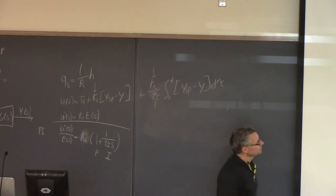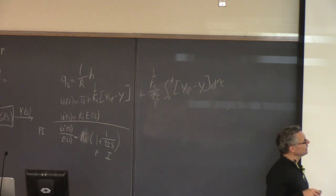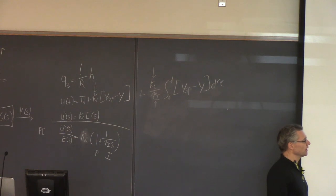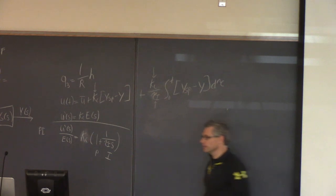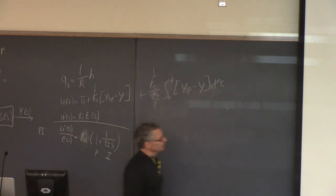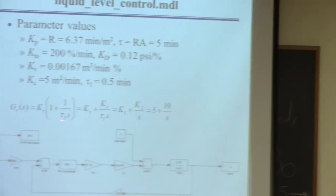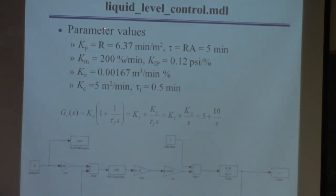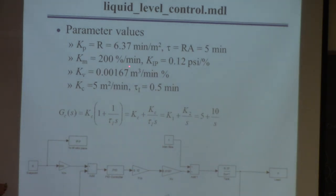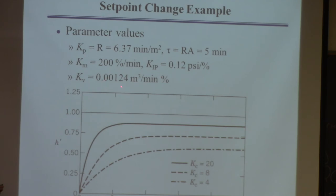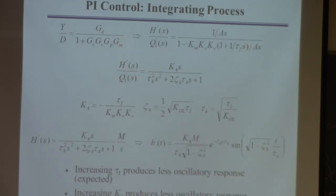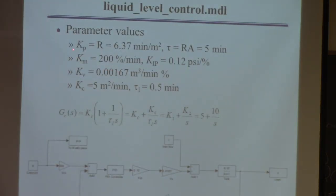Now I'll do the same example in Simulink. There's a slightly different value of KV in this Simulink example compared to the analytical one — I'm just pointing that out. Everything else is the same: same valve resistance, time constant, cross-sectional area, measurement device gain, I-to-P converter gain, and valve gain.